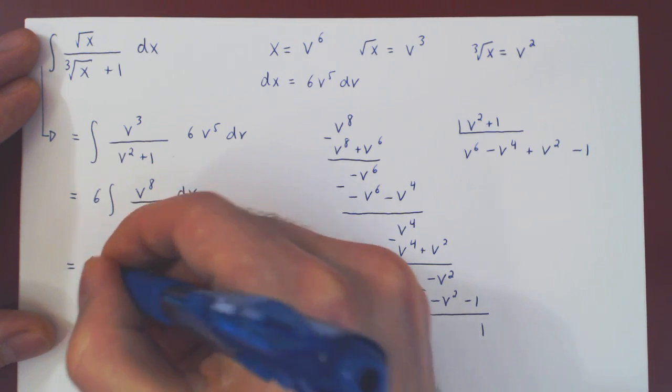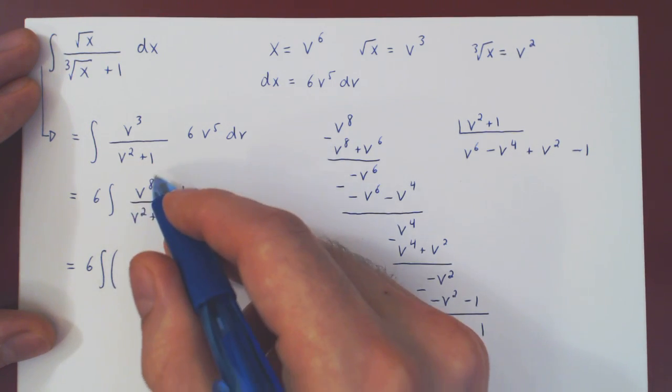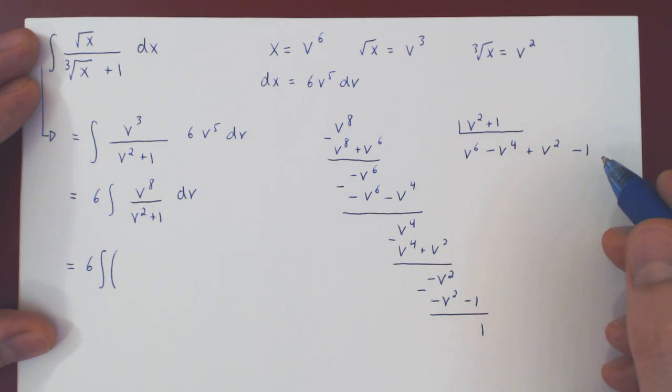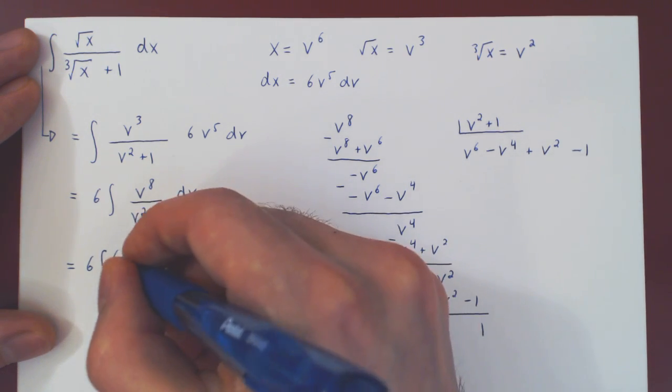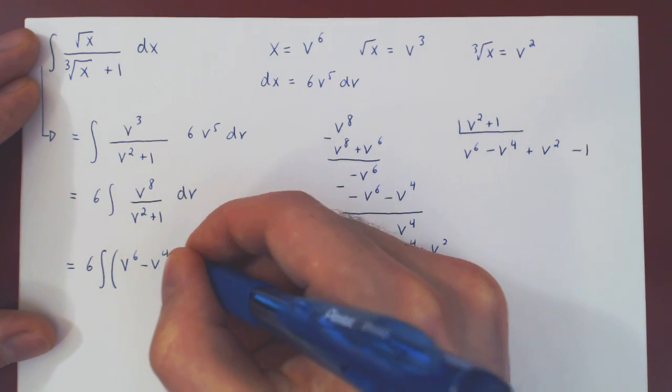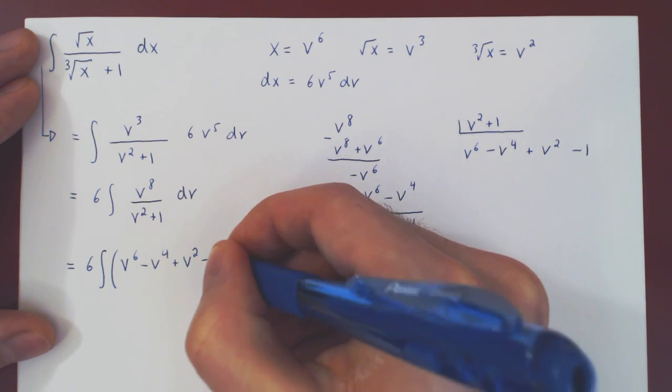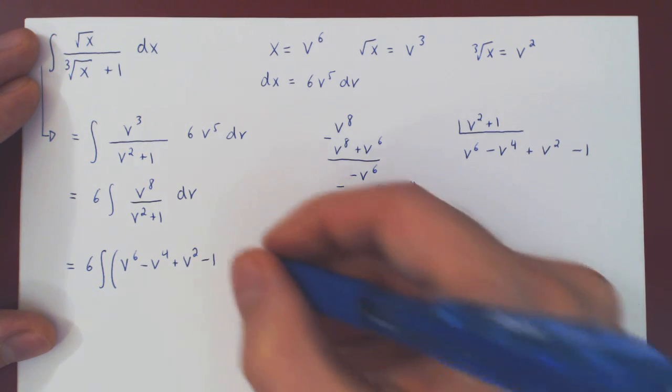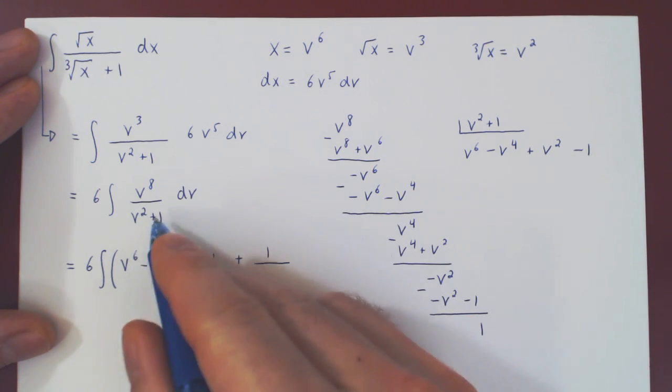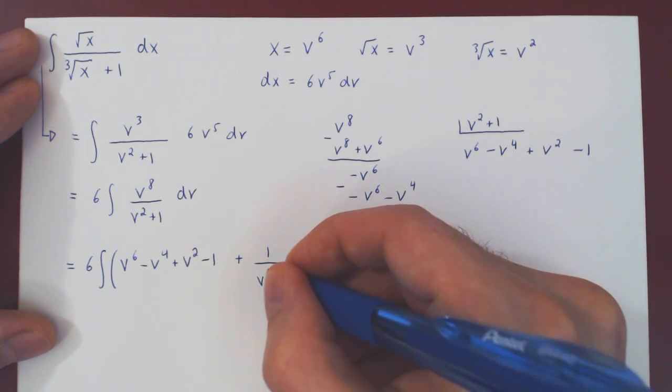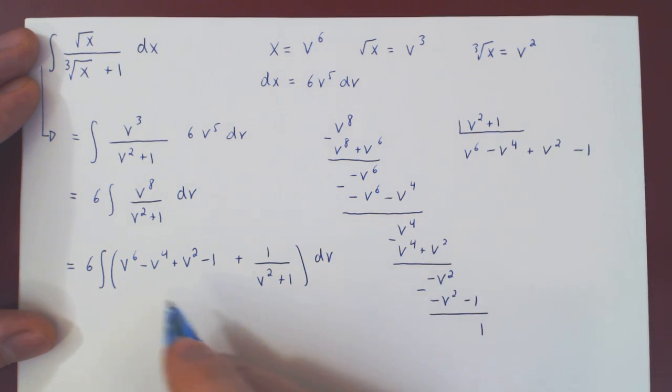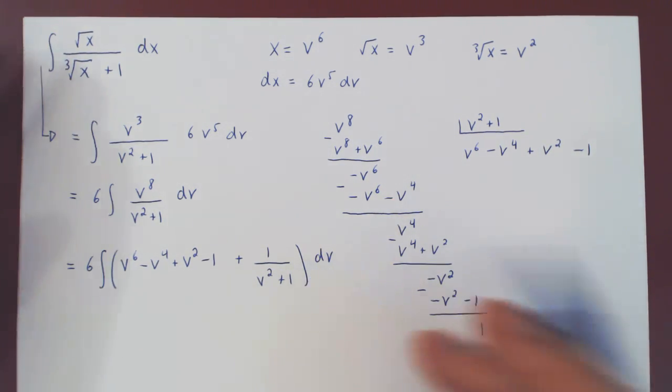So what do we get from this long division? Well, the rational function v to the 8 over v squared plus 1 will equal its quotient, so v to the 6 minus v to the 4 plus v squared minus 1 plus the remainder over of course the divisor v squared plus 1.